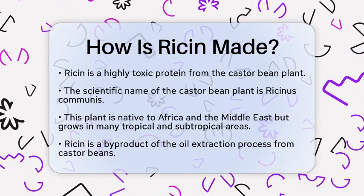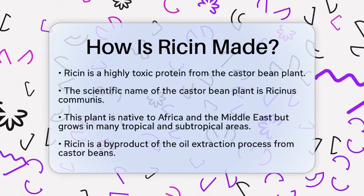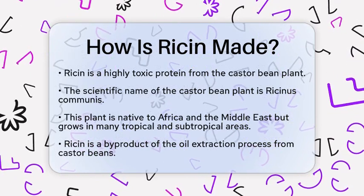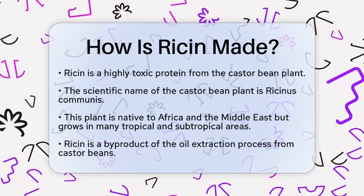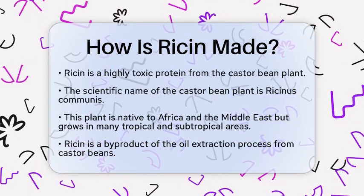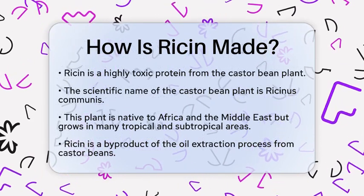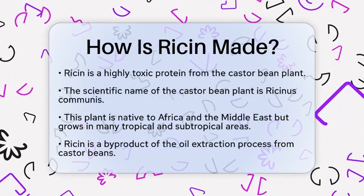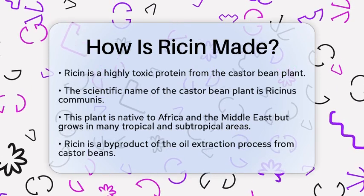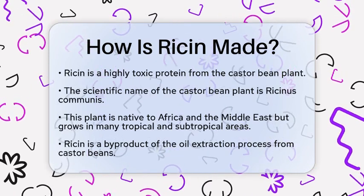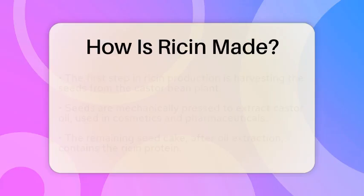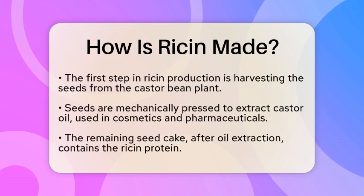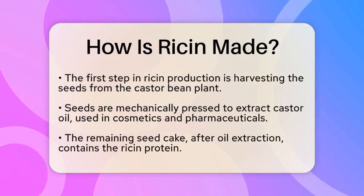The castor bean plant, scientifically known as Ricinus communis, is native to Africa and the Middle East but is now found in many tropical and subtropical regions. The seeds of this plant contain a compound called ricin, which is a byproduct of the oil extraction process.